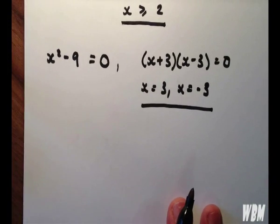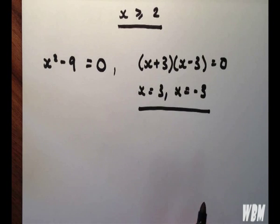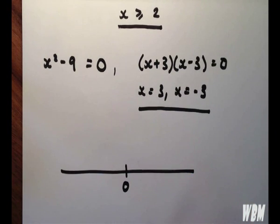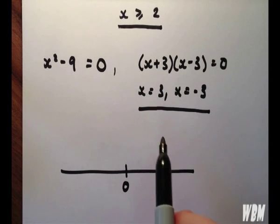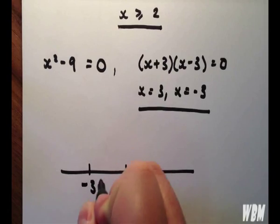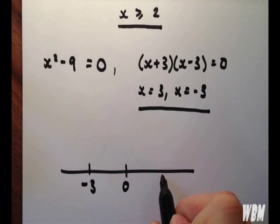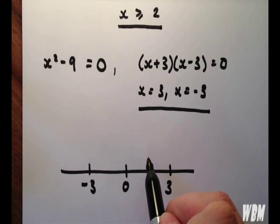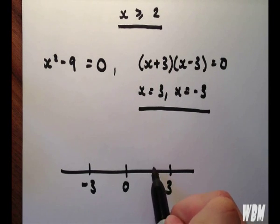So if you consider the number line, we have some conditions we have to impose. So what conditions have we been given? We've been given x cannot be minus 3, x cannot be 3, and x has to be greater than or equal to 2.